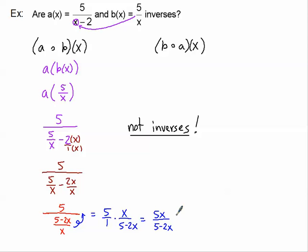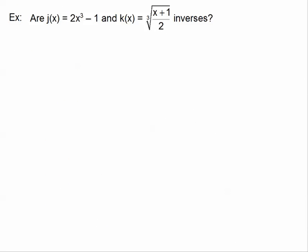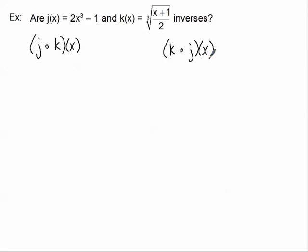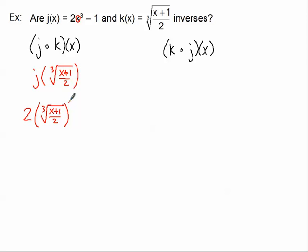We don't need to check b(a(x)) because if the first composition didn't work, they're not inverses. For example 2, we have j(x) and k(x) — are these inverses? Computing j(k(x)): k(x) is the cube root of (x + 1)/2, so we plug this into j. We get 2 times the cube root of (x+1)/2, all cubed, minus 1.